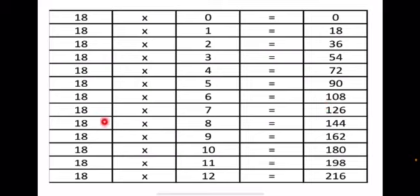18 sevens are 126. 18 eights are 144. 18 nines are 162. 18 tens are 180. 18 elevens are 198. 18 twelves are 216.